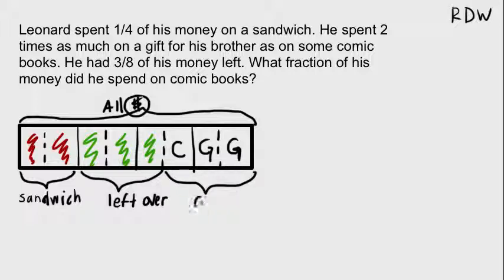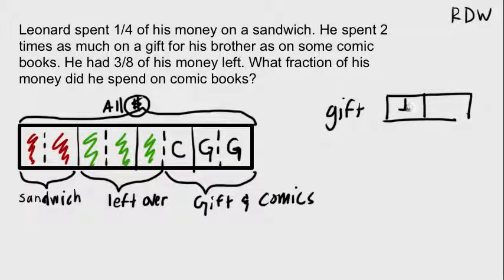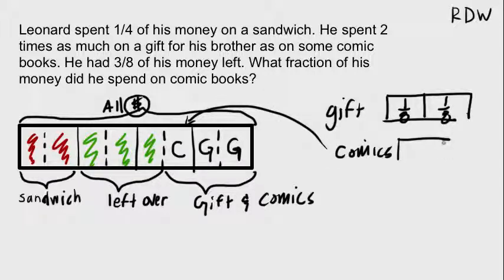So this is the gift and the comics. What do each of these represent? Well, the gift, each of those are an eighth, so here's an eighth and here's an eighth, so that's two-eighths. And on the comics, this piece here is only one-eighth.